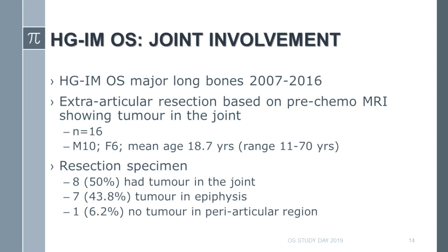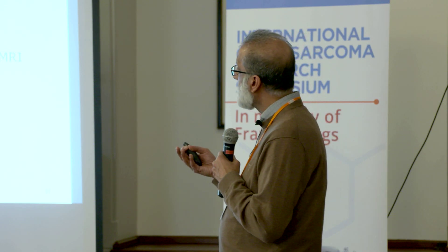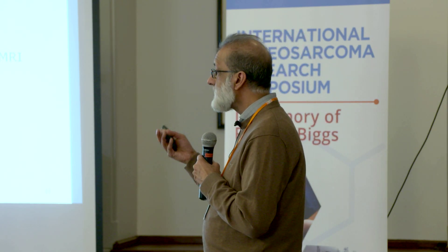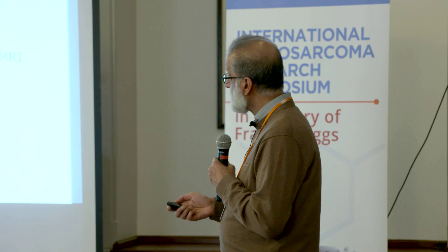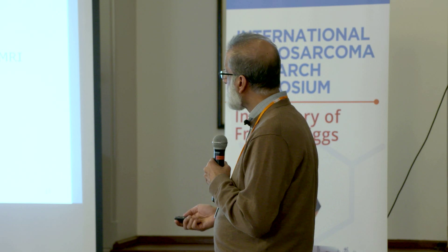We looked at our extra-articular resections over a 10-year period. Out of those patients with osteosarcoma, 16 had had an extra-articular resection based on pre-chemotherapy MRI suggesting the joint was involved — either a fracture in the joint or clear tumor extending into the synovial space. When the resection specimen was reviewed, 50% had tumor in the joint, seven had tumor in the epiphysis but not in the joint, and one patient had no tumor at all within the periarticular region. So we clearly need to improve our criteria for joint involvement, because we are doing too many extra-articular resections.